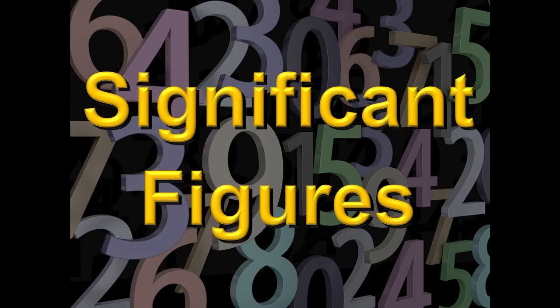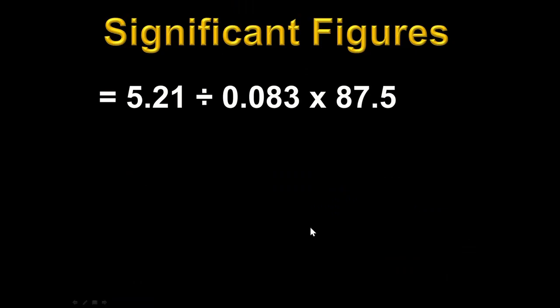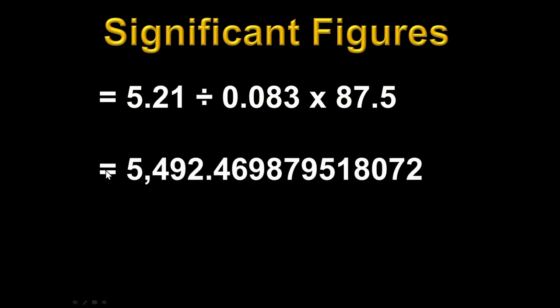If you've already had a chemistry course, you've probably covered significant figures. If you haven't had chemistry and this is new for you, we'll cover it right now. If we take 5.21 and divide it by 0.083, and then multiply by 87.5, our calculator gives us an answer. And if you wrote that as your answer, you should know that would be a dishonest answer.